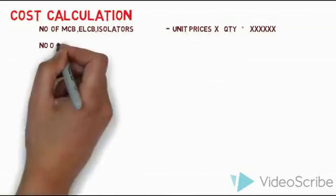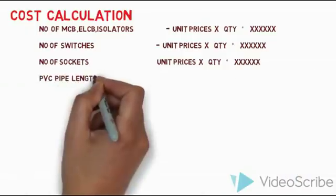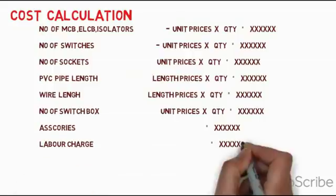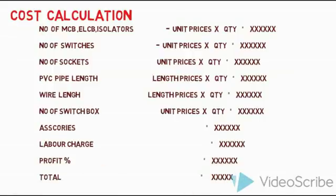The final step is cost calculation. This includes the MCCB, ELCB, and isolator; number of switches; PVC pipe; wire; number of switch boxes; accessories such as screws, nuts, bolts, and drill machines; labor charges; and profit. Using all of these items, you can complete the cost calculation for house wiring.